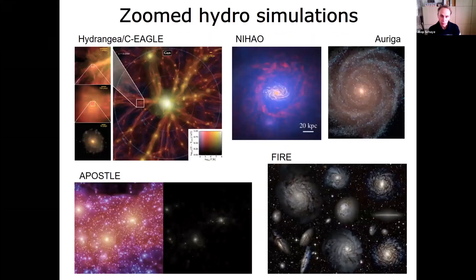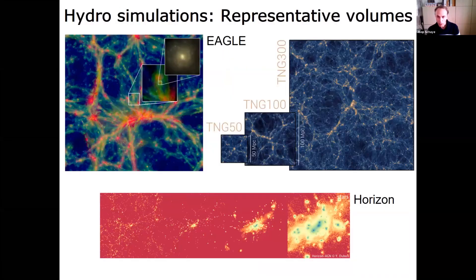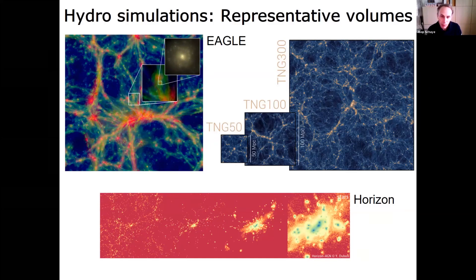Several zoom simulation projects from recent years include Hydrangea and APOSTLE, which use the EAGLE model — APOSTLE zooms into local group galaxy environments and Hydrangea zooms into clusters. Beyond EAGLE, other major groups running these simulations include IllustrisTNG, Horizon, and SIMBA, which has a strong South African link. Before SIMBA, there was MUFASA.